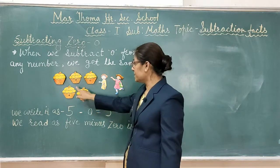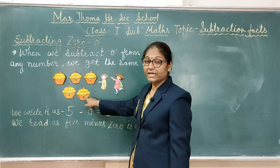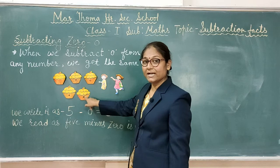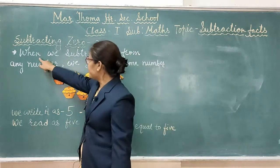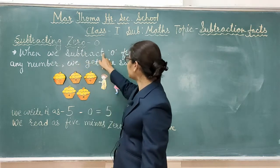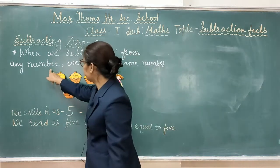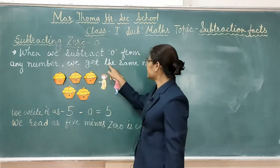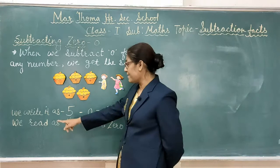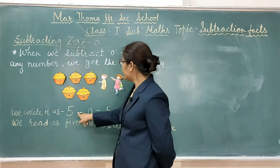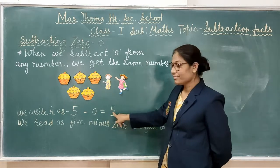1, 2, 3, 4, 5. She did not eat any cupcakes — means 0. So students, when we subtract 0 from any number, we get the same number. We write this example as 5 minus 0 is equal to 5.